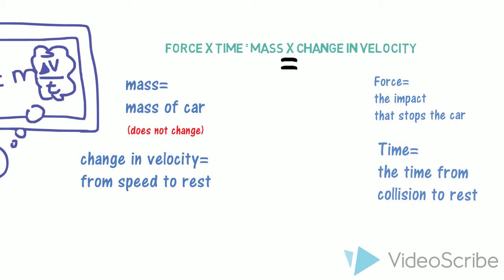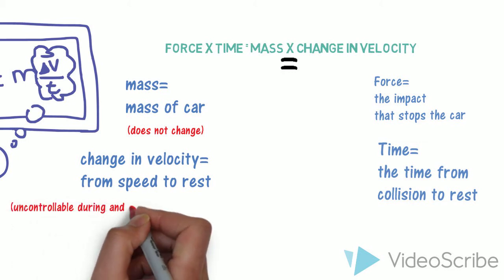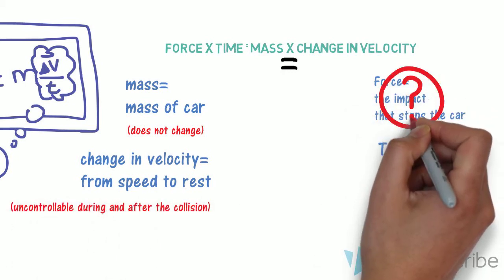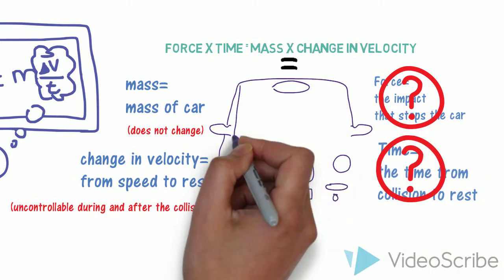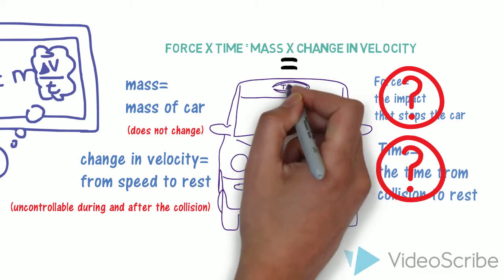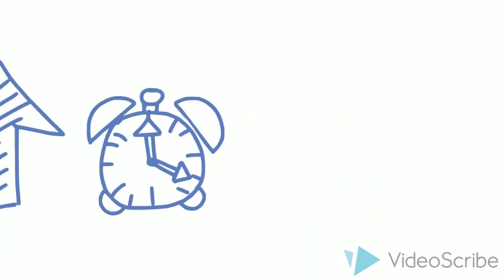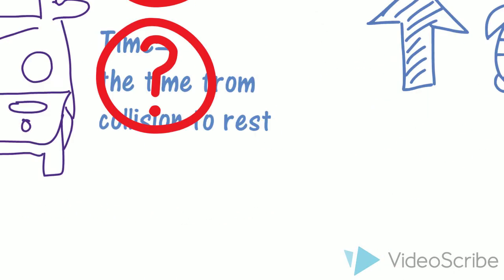The mass does not change, and the change in speed is uncontrollable during and after the accident. What about the force and time? Since drivers are incapable of controlling the change in momentum, the car company designs your car to increase your stopping time in order to reduce your stopping force.